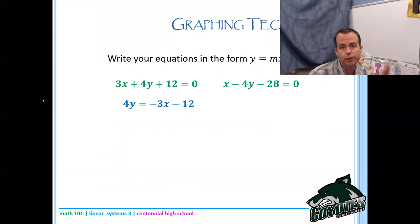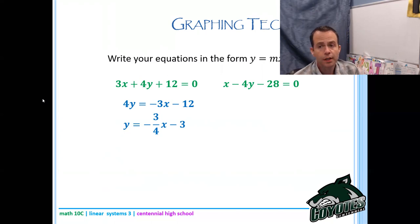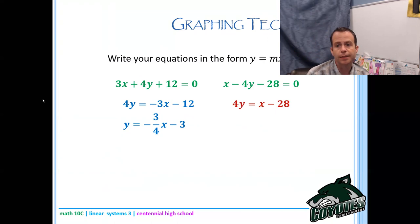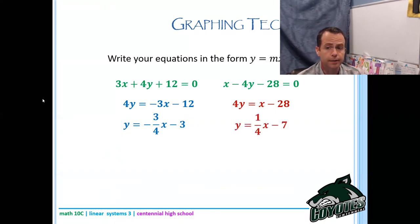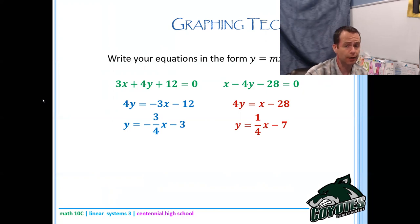Isolating for y: I want to bring the 3x over and the 12 over, then divide everything by 4. That gives me y = -3/4 x - 3. On the other equation, I bring the -4y over so it becomes positive 4y, divide everything by 4, and that gives me y = 1/4 x - 7. Now grab your graphing calculator — equations always have to be in y = mx + b form.